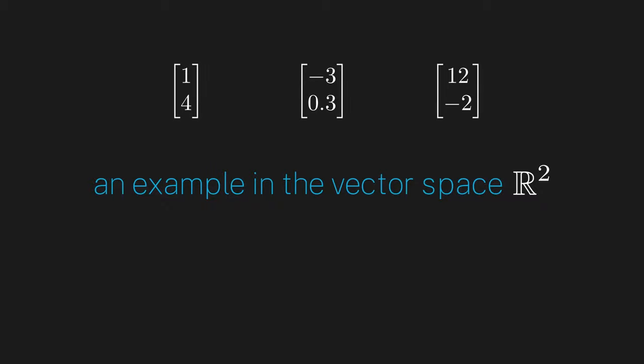So to begin introducing bras, let's look at an example in the vector space of R2. I'm going to define a very simple linear map called LX. What it does is it takes in a vector and spits out whatever its x component is.